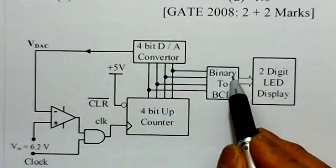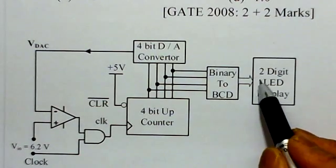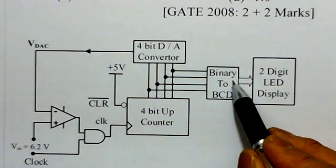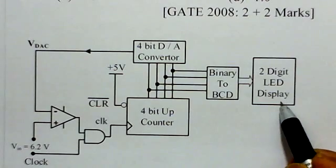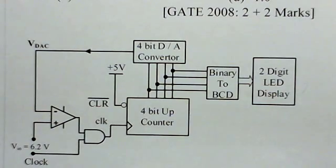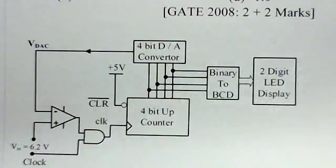Now this counter output is also fed to binary to BCD converter, and that is used for LED display, 2-digit LED display. So this is the entire arrangement of this circuit. And once we understand this circuit, it is very easy to solve the problem.